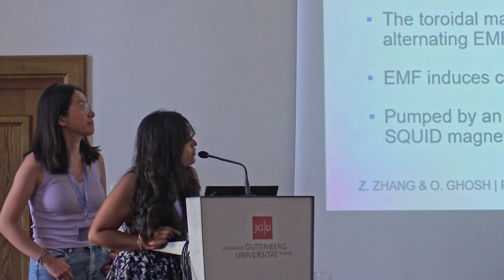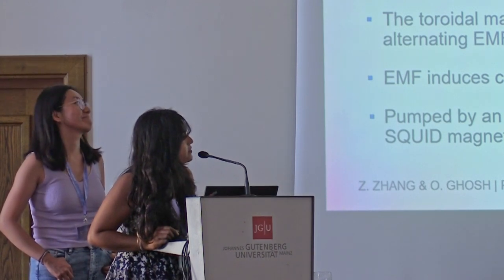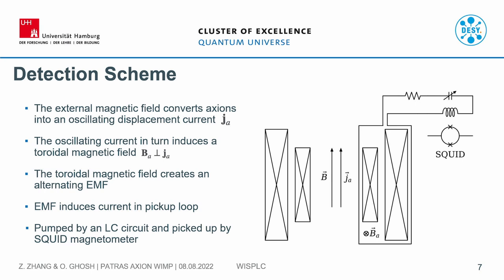Here we have a warm bore, and these are the magnets. This B field will convert the axions in the Milky Way to a displacement current J_A, and this oscillating displacement current will then induce a toroidal magnetic field. This magnetic field will drive an electromotive force, which will then generate a current, which will then be picked up by this loop. There is an LC circuit right here which will amplify this, and afterwards it could be detected by a magnetometer made of a superconducting device.